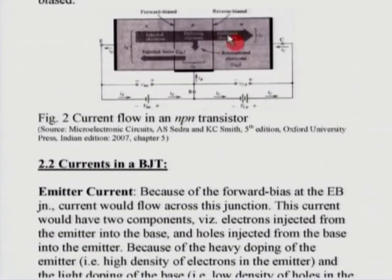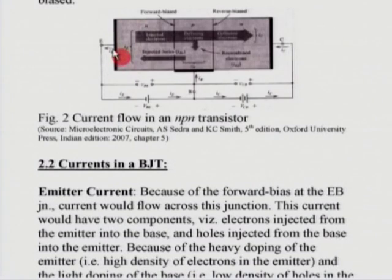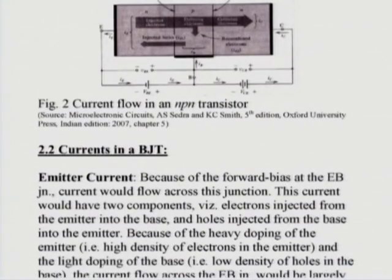Since the emitter current is basically due to electrons being injected from the emitter to the base, the actual direction of current would be opposite to the electron flow. So in an NPN transistor, the emitter current flows out of the emitter, base current flows into the base, and the collector current flows into the collector terminal. We have seen briefly these three currents — the emitter current, the collector current and the base current — and their constituents and how they actually flow.